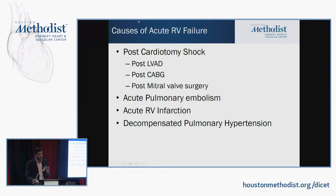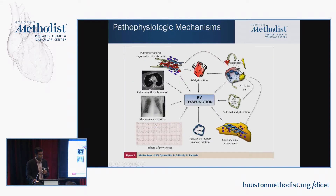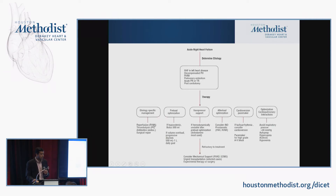Causes of acute RV failure include post-LVAD, post-bypass, post-mitral valve surgery, acute PE, RV infarction, and decompensated end-stage pulmonary hypertension. In terms of how you treat it — afterload reduction and preload optimization.